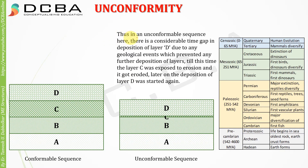In an unconformable sequence, there is a considerable time gap in the deposition of layer D. Due to geological events which prevented further deposition, layer C was exposed to erosion and got eroded. Later, deposition of layer D started again.